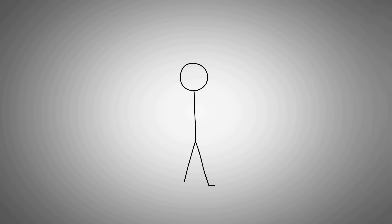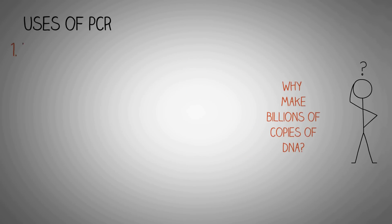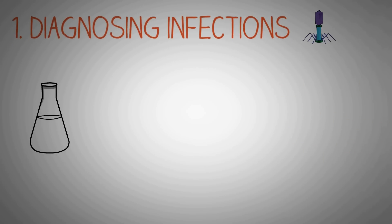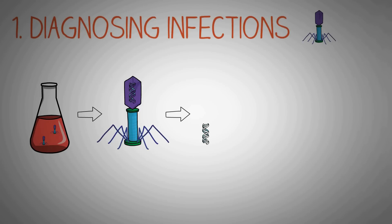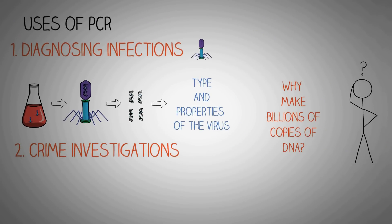The next question you would ask is why would we want to make a billion copies of a region of DNA? Well, PCR has thousands of uses, like in diagnosing infections and infectious diseases. For example, it is used to diagnose infections by viruses. We take blood of a patient that has been infected by the virus and then we amplify the DNA of the virus so that we are able to study which type of virus it is and its properties. Similarly, PCR is being used in hundreds of other fields like crime investigations, genetic research, molecular biology, etc.